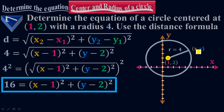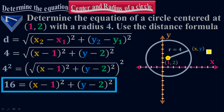When you look at this point x comma y, my x sub 2 is x — plug in x sub 2 equals to x. And my y sub 2 is y — plug in y sub 2 equals to y. As I said, x sub 1 is 1 and y sub 1 is 2, which are the values of h comma k. That's how this equation looks like graphically.